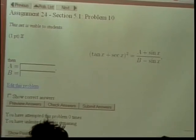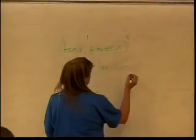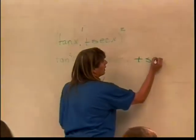So if I do that, I have tangent squared of x plus tangent of x times secant of x. Let's see how this one's doing. Plus secant squared of x.